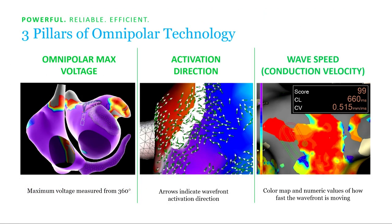Omnipolar technology enables three things: omnipolar max voltage—determining the maximum bipolar voltage in any 360-degree angle; activation direction from the HD grid poles, importantly independent of a far-field reference; and the ability to look at conduction velocity wave speed within the chambers, something conventionally only possible in basic science labs with optical mapping.